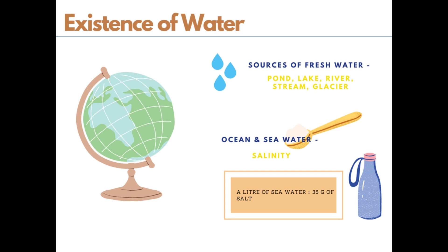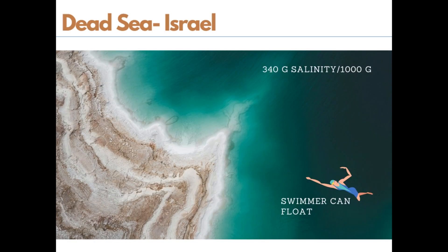In a litre of sea water there are 35 grams of salt, that is approximately 3.5 percent per thousand. The water in the sea is dense as the salt content is high, and a swimmer can even float in the sea.